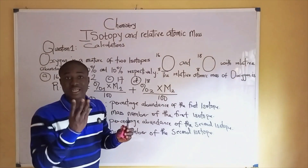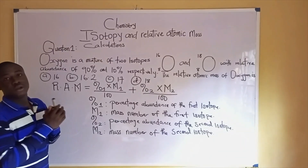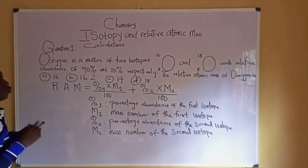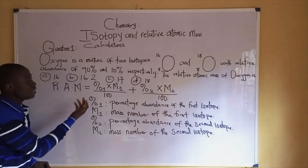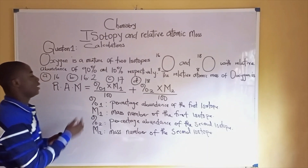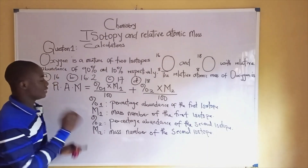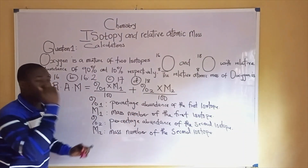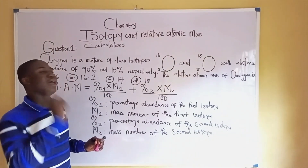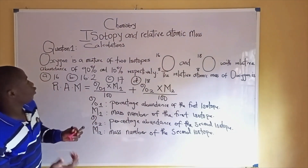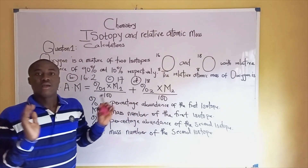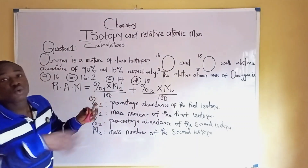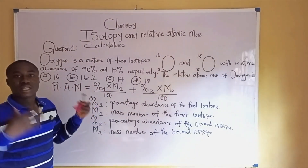In today's video lesson, I will be using three formulas to solve problems on relative atomic mass calculations. %1 is percentage abundance of the first isotope, M1 is mass number of the first isotope, %2 is percentage abundance of the second isotope, and M2 is mass number of the second isotope. Remember, percentage abundance can also be called relative abundance or geometric abundance.